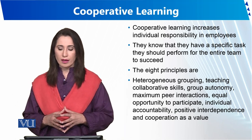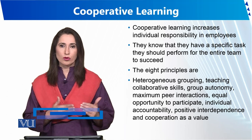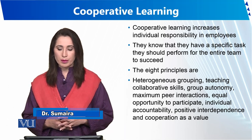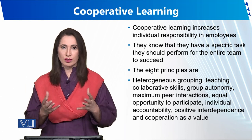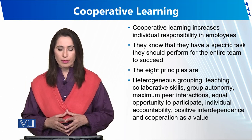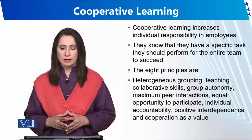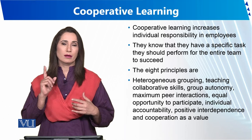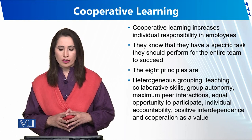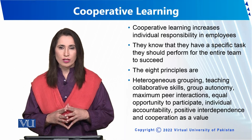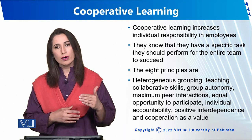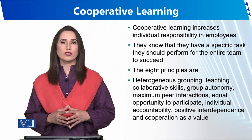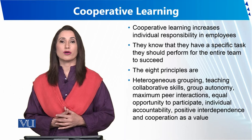Group autonomy means every member is responsible for their own work and works independently. There is maximum peer interaction — students interact with each other and learn from one another. Equal opportunity to participate means any group member can present the work. Individual accountability means every person is involved and adds their share of work. Positive interdependence means there should be no jealousy but rather positive dependence on each other's work. Cooperation is the core theme of cooperative learning, through which children learn to share and develop teamwork.